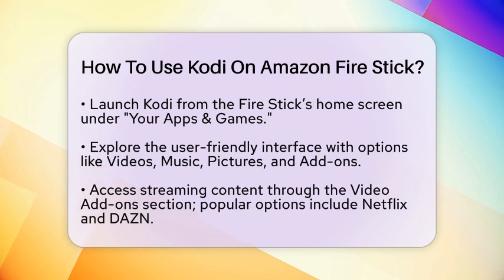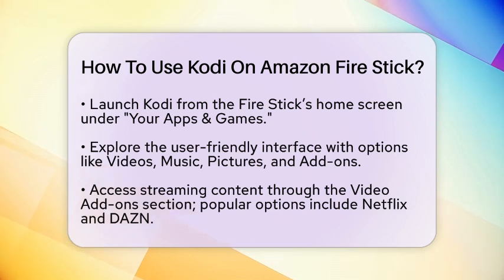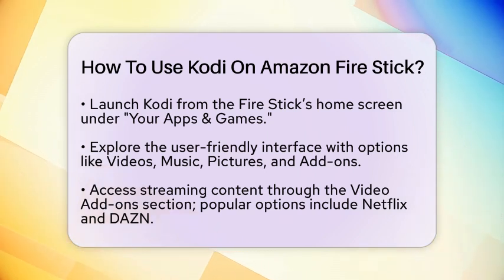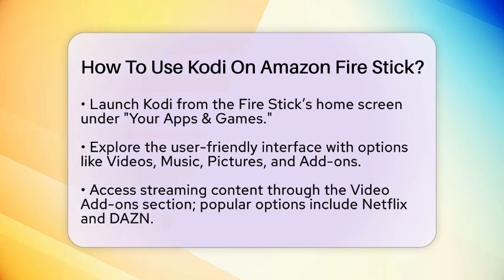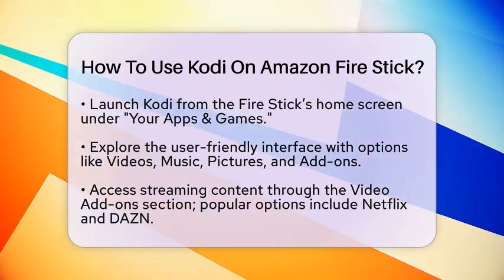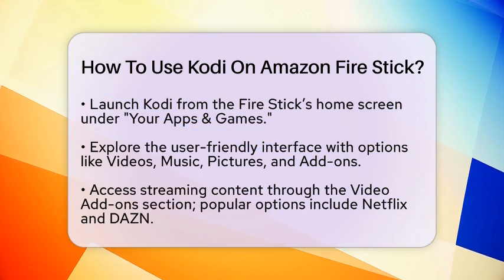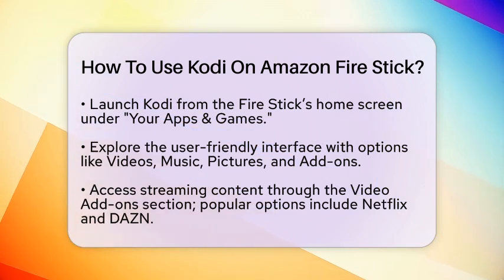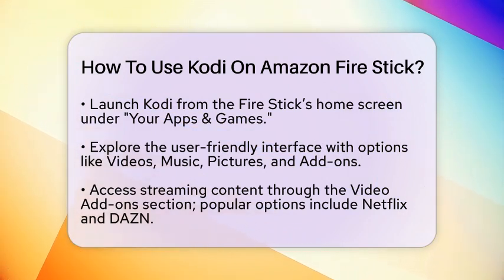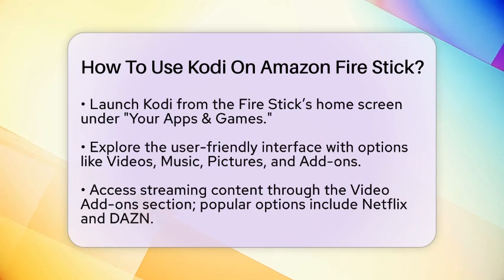To ensure Kodi works well with your home theater TV, you may want to calibrate the video settings. Go to Settings, then System Settings, and select Display. From there, choose Video Calibration. Use the up and down buttons on your remote to adjust the screen fit for your TV.